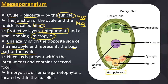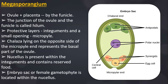A nutritive layer called nucellus is present within the integument and contains the reserved food for the embryo sac. The embryo sac, or female gametophyte, is located within the nucellus. The embryo sac is the female gametophyte; the pollen grain is the male gametophyte.